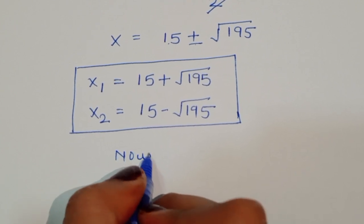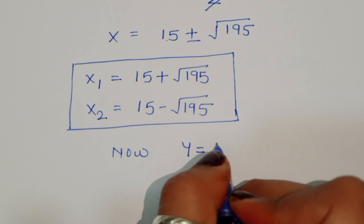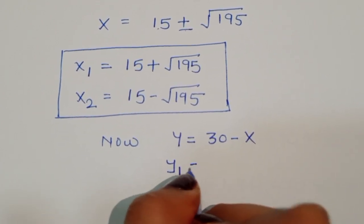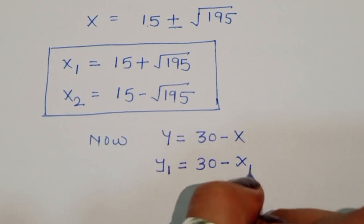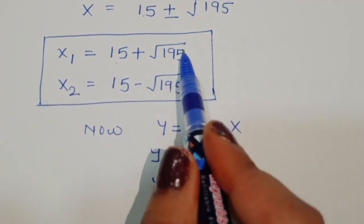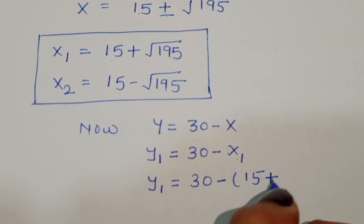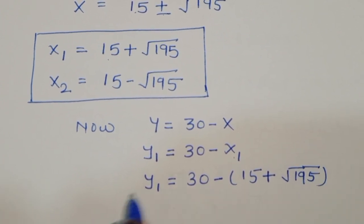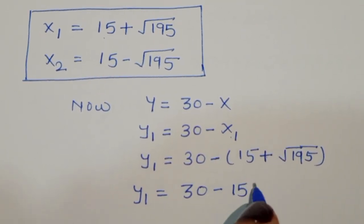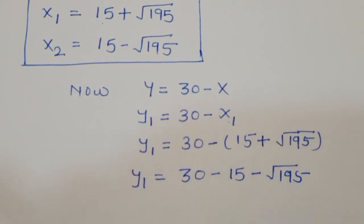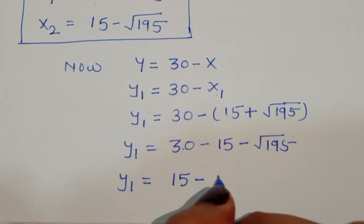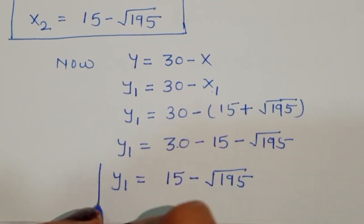From equation 3, y equals 30 minus x. For y1, y1 equals 30 minus x1 equals 30 minus (15 plus square root of 195), which gives y1 equals 15 minus square root of 195.